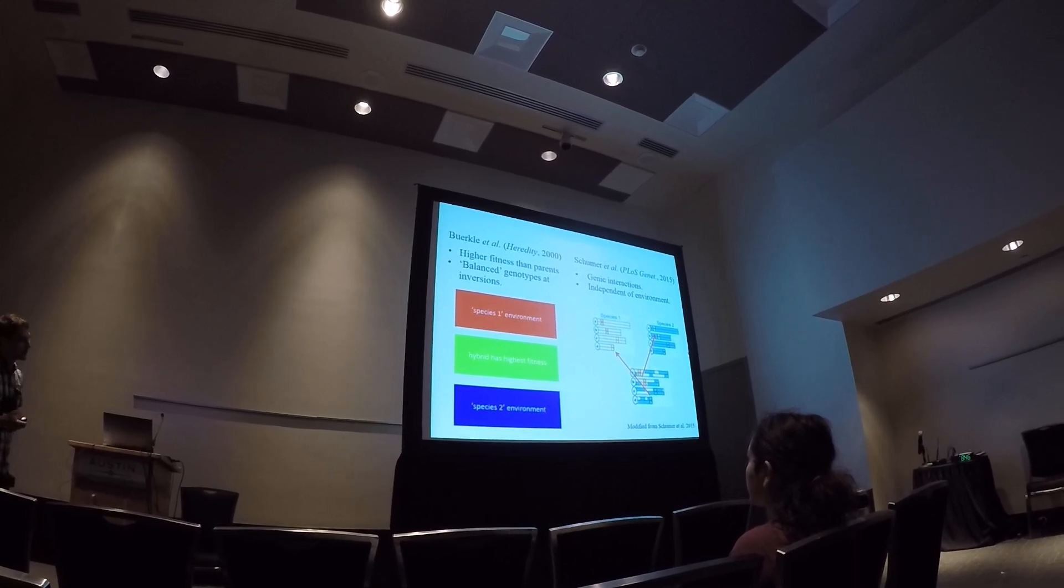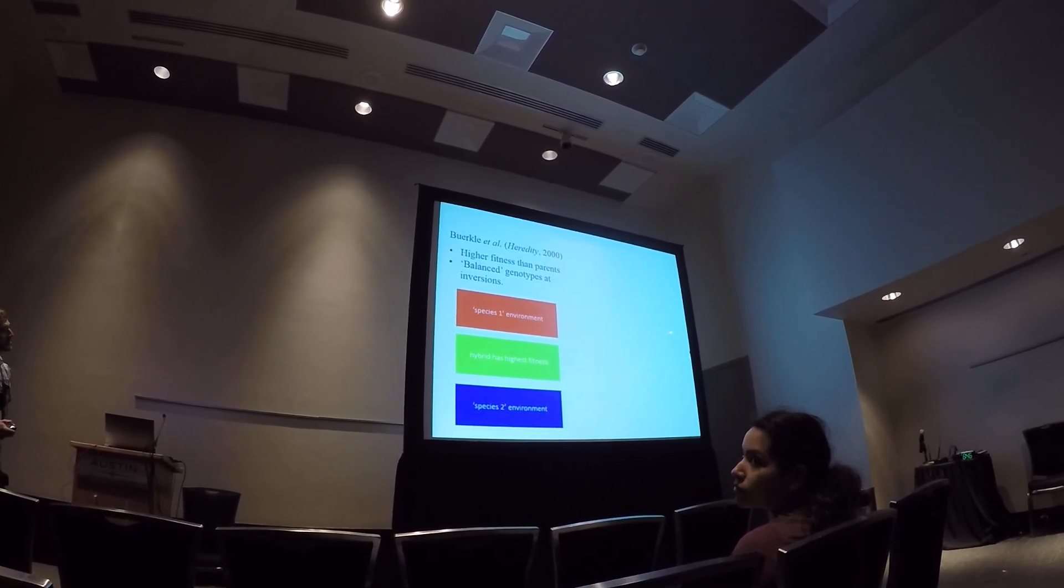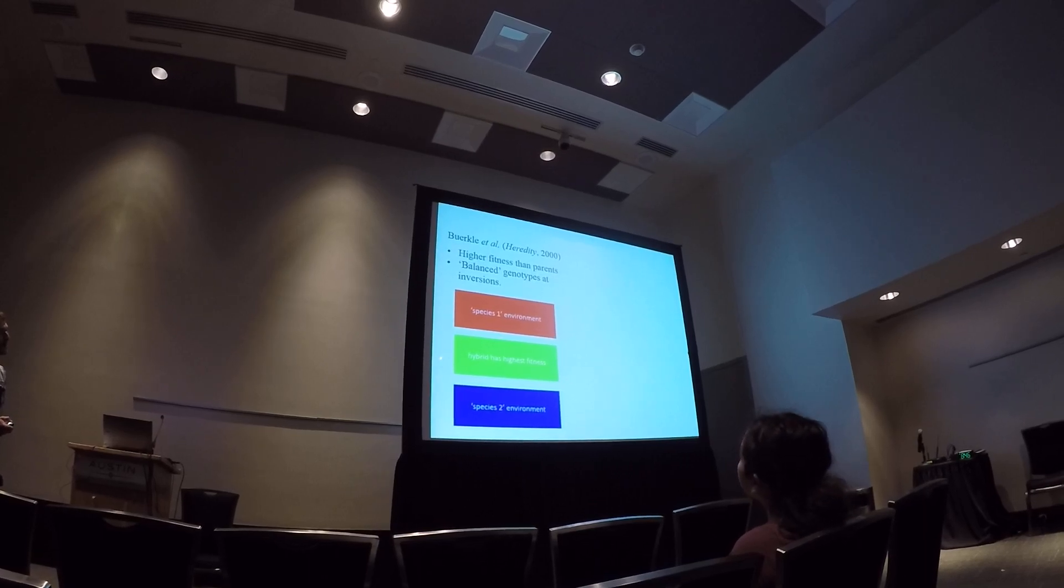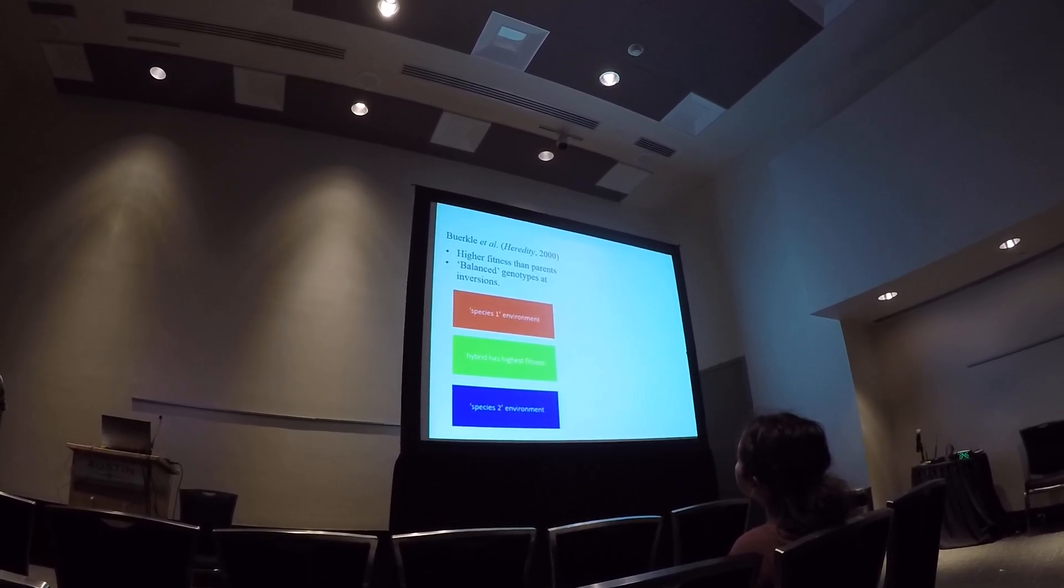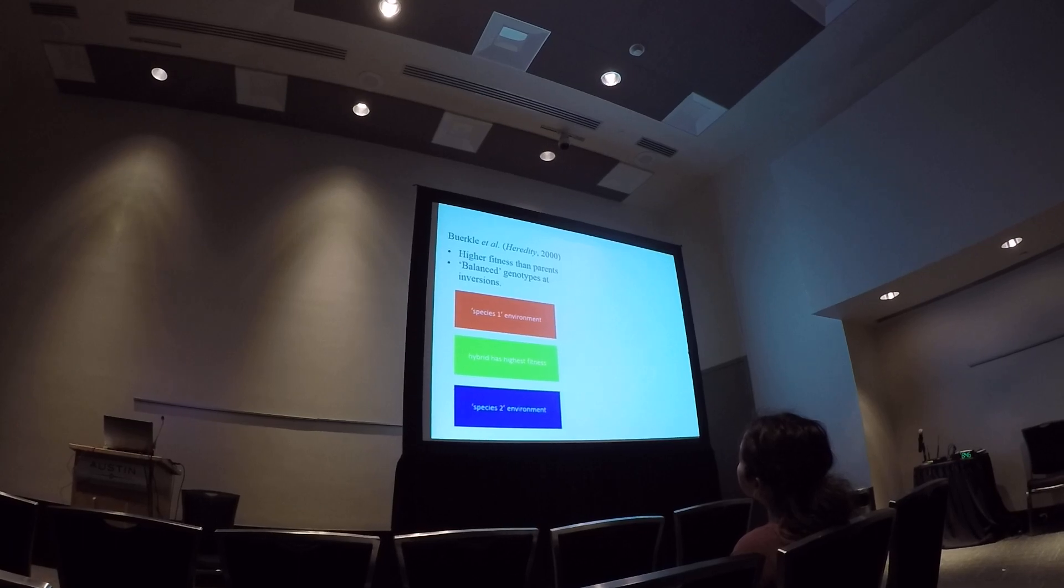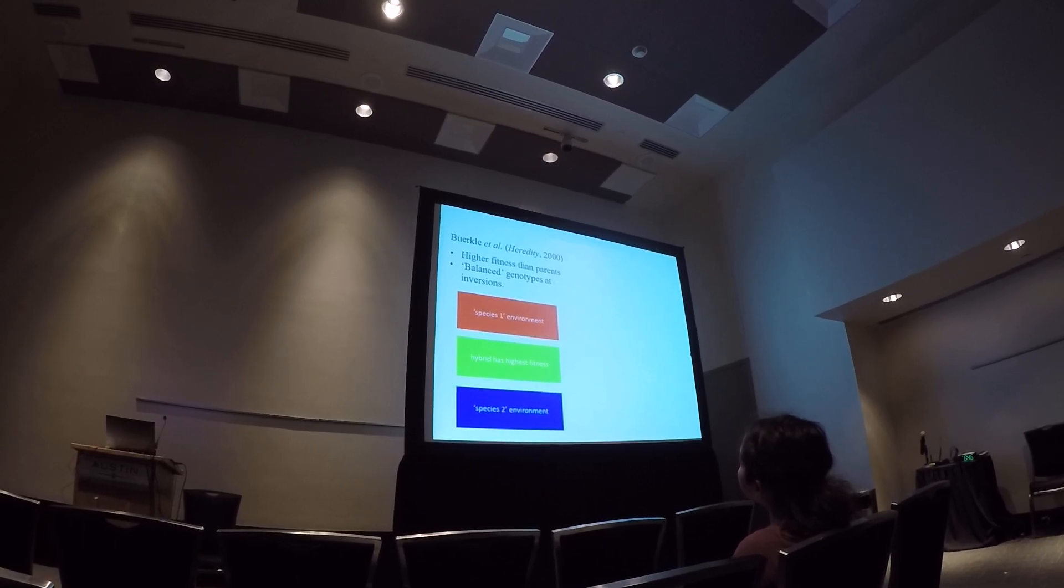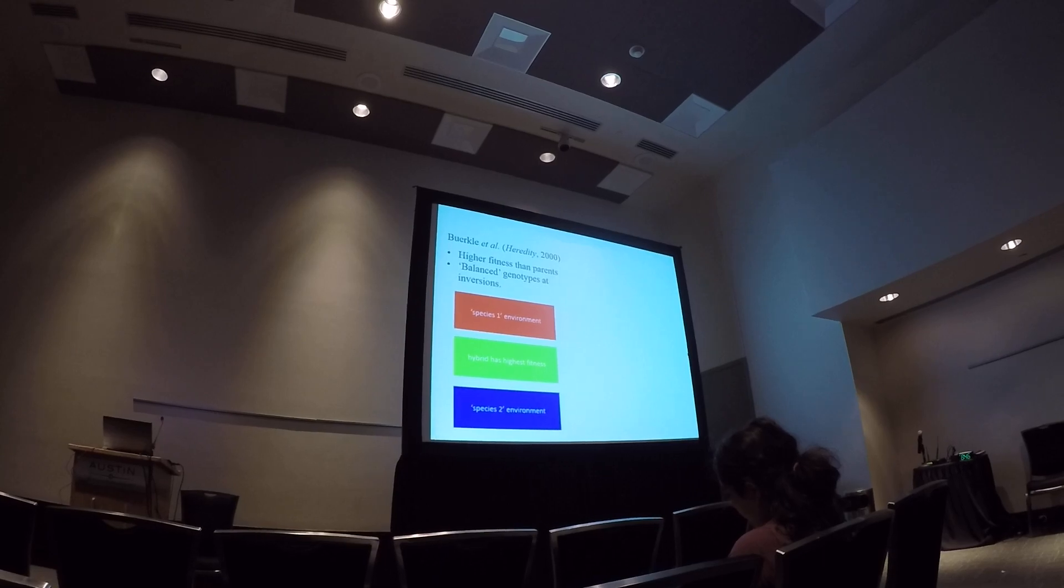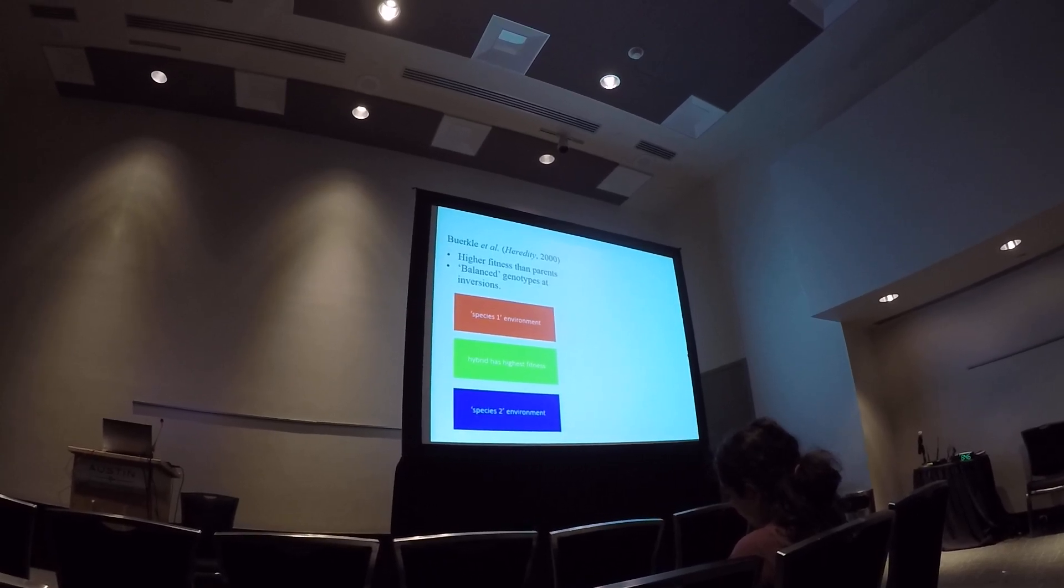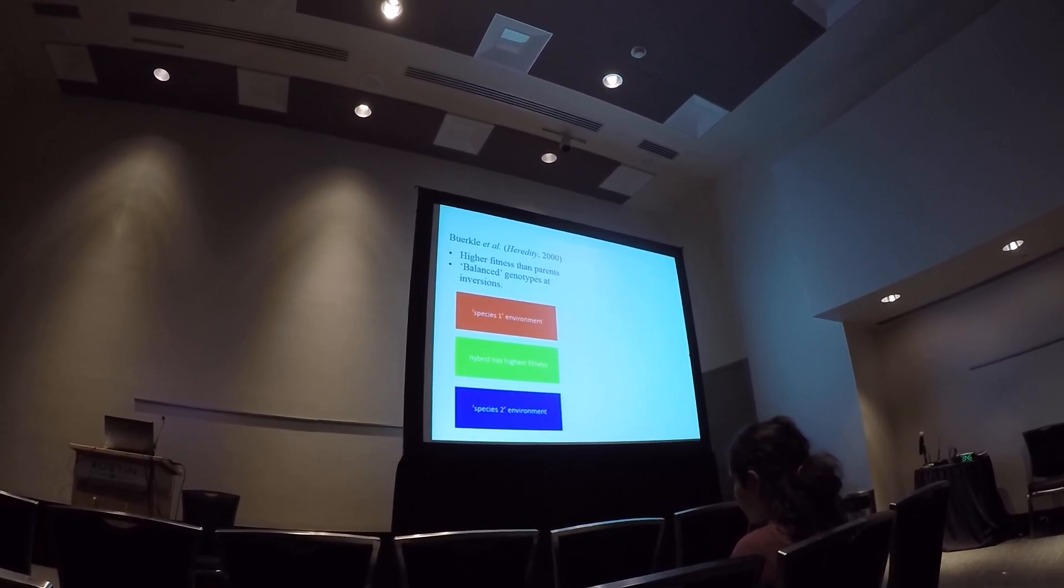hybrids are fit in a novel environment, so you have transgressive segregation for traits involved in fitness, and so hybrids do very well in an intermediate or novel environment compared to the two parental species. The two parental species do really poorly in this environment, so hybrids are able to invade this environment.